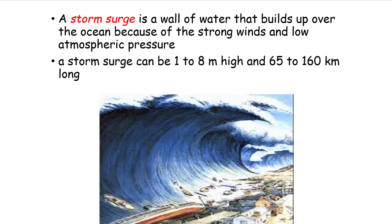A storm surge is a wall of water that builds up over the ocean because of strong winds and low atmospheric pressure. This is mostly what causes tsunamis, though those usually happen with earthquakes. A storm surge can be one up to eight meters high and 65 to 160 kilometers long, mostly happening in oceans.